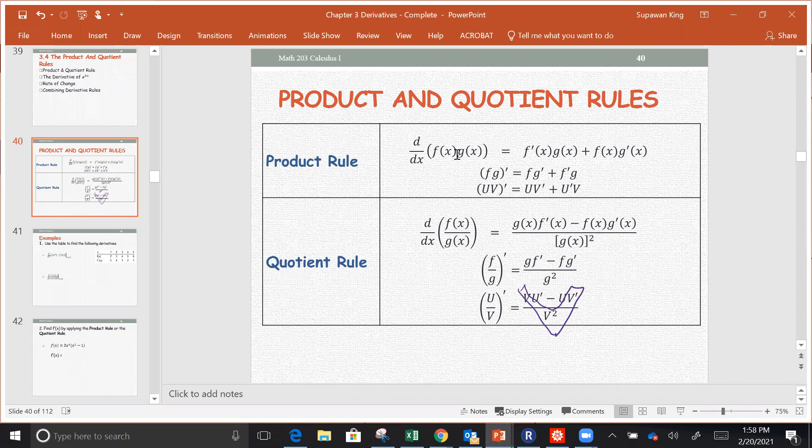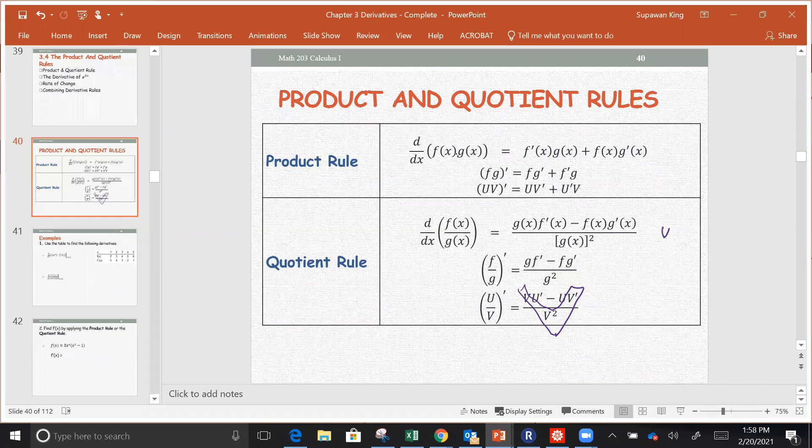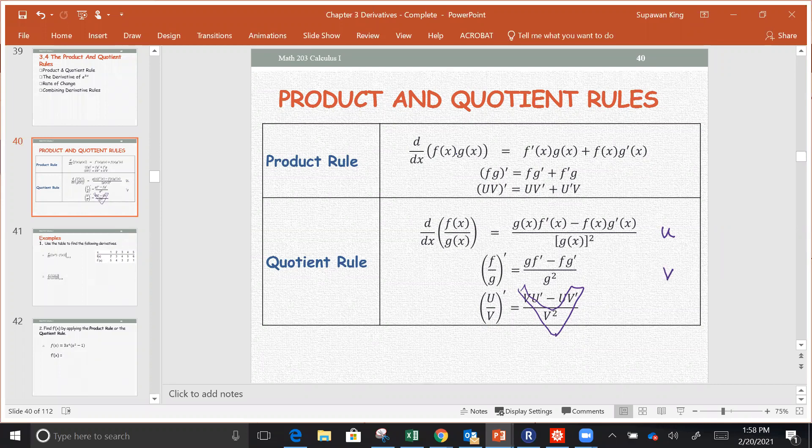Both product and quotient rule, you have to identify the first function, the second function, either in the u and v version or the f and g version. Next, you're going to find u' and v'.